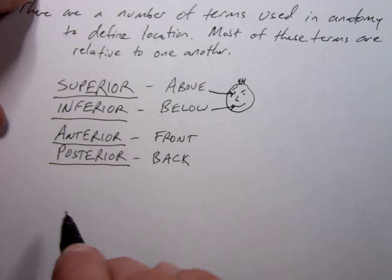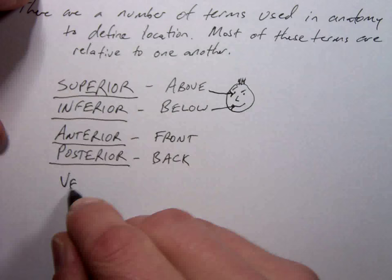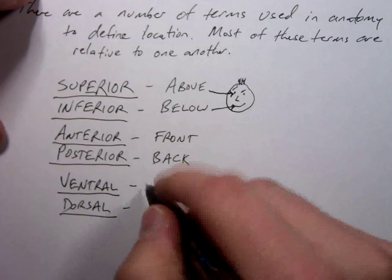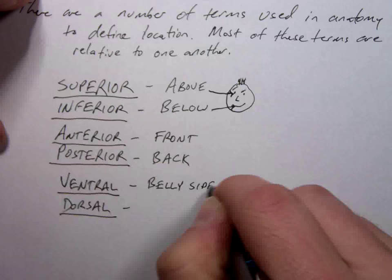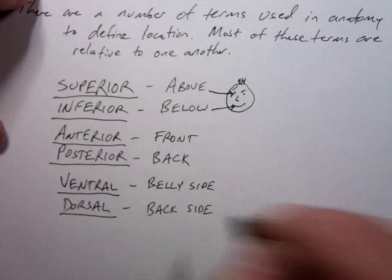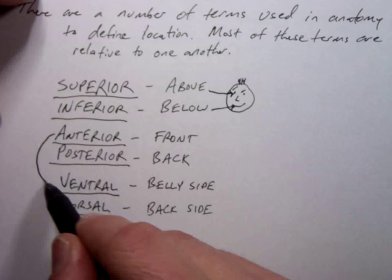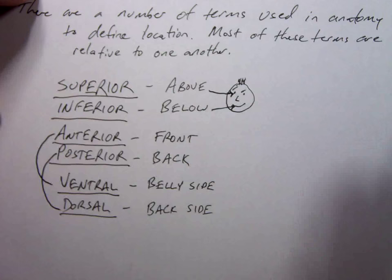Now for us, it means the same exact thing as these next two terms. But it's not true for all organisms. In fact, it's not true for anything besides really us. There is the word ventral and dorsal. Ventral means belly side. Dorsal is back side.